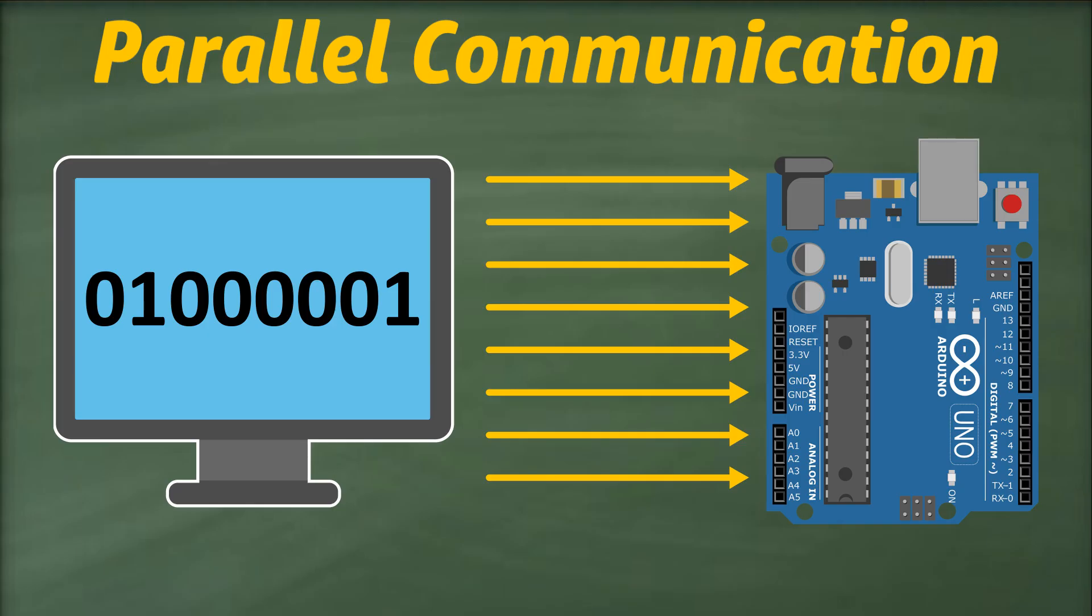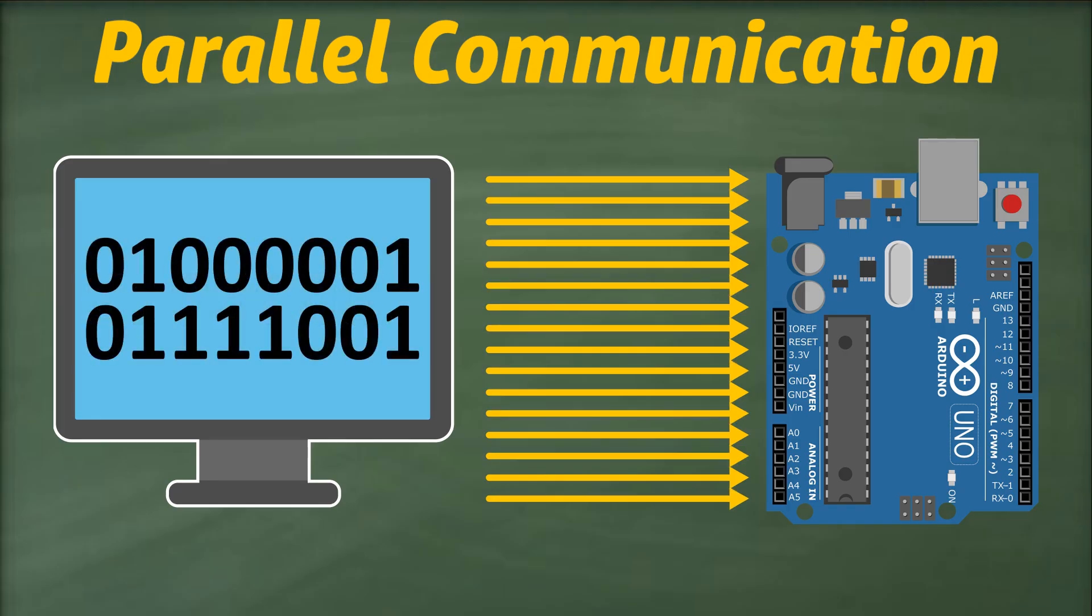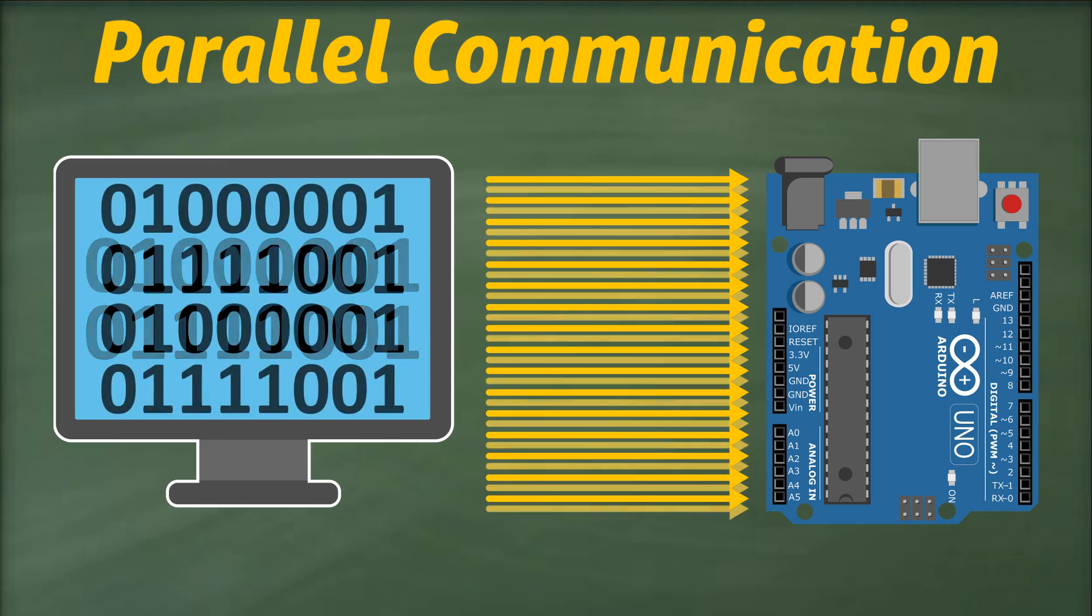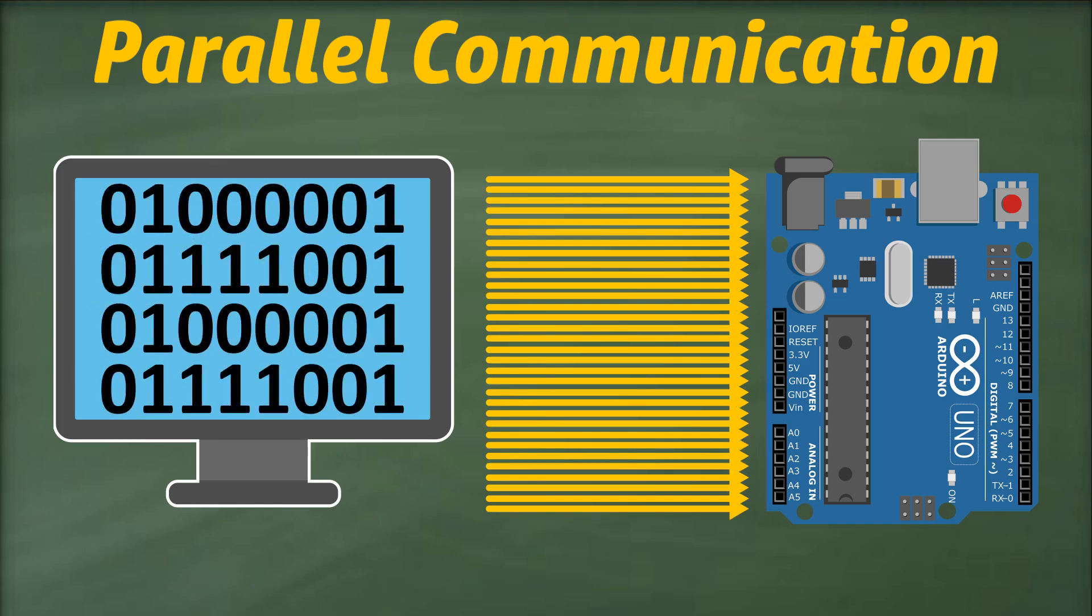The downside of this approach is that we have to use eight wires to send an 8-bit data. So if we want to transmit 16-bit data to our Arduino, we will have to use 16 wires. And if we want to transmit 32-bit data, we will have to use 32 wires, and so on.